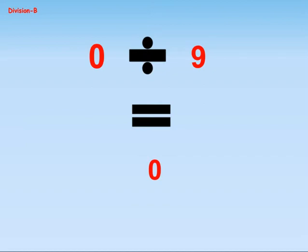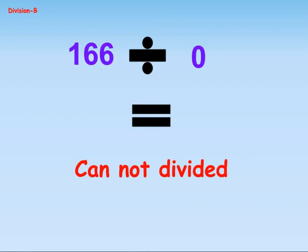Zero divided by nine equals zero. One hundred and sixty-six divided by zero is not defined.